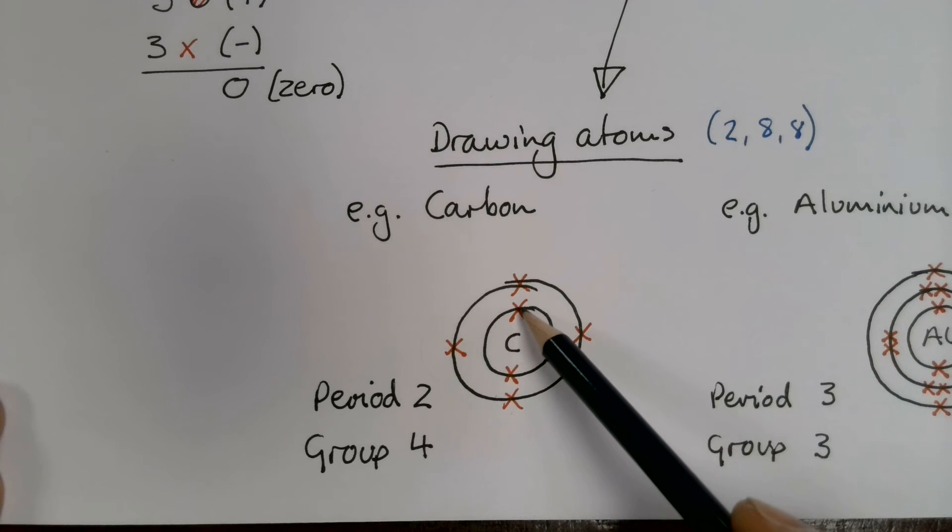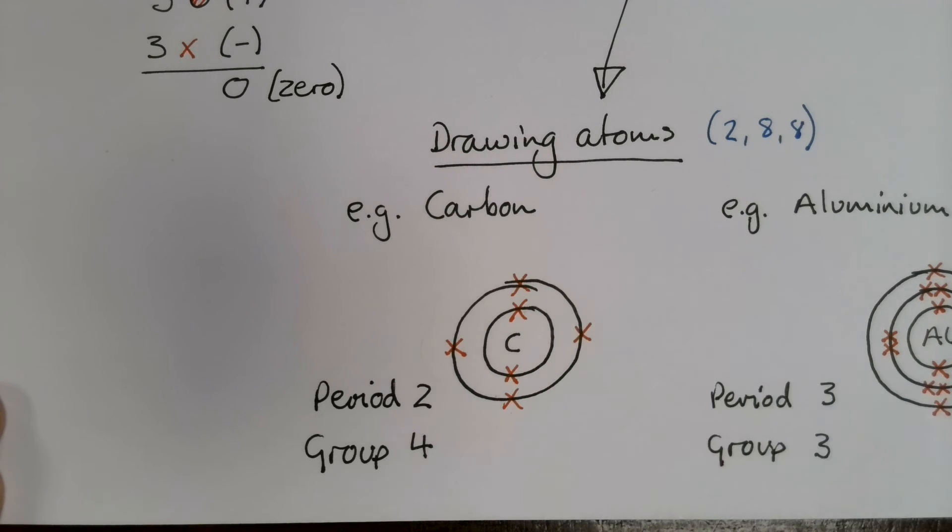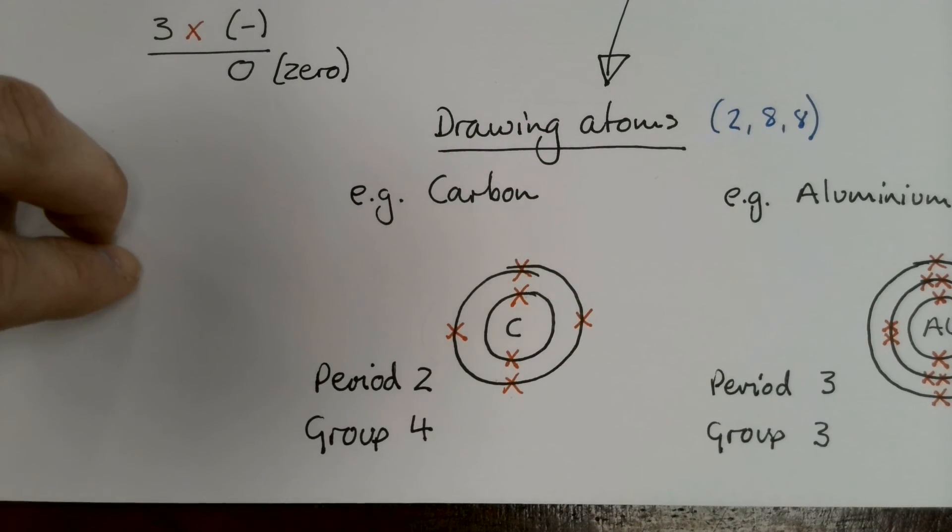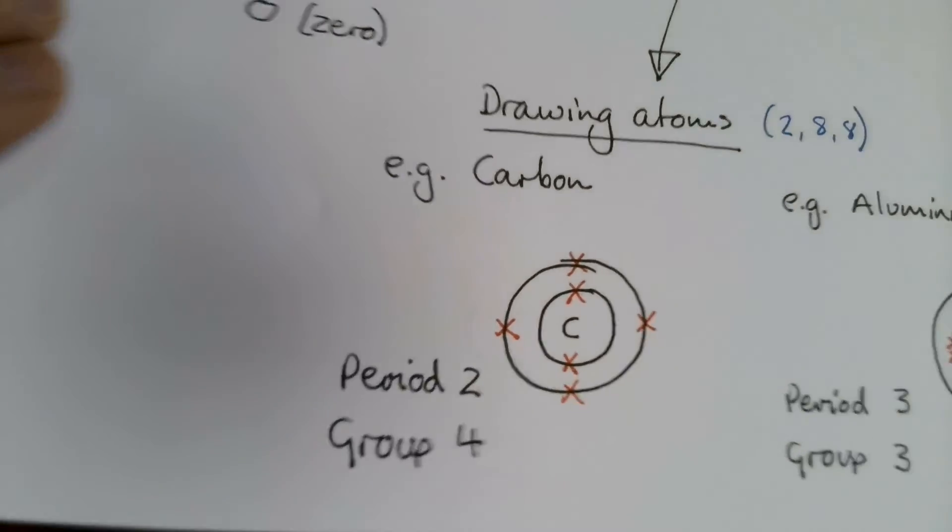When drawing atoms, we tend to work from the inside outwards. I'll show you on the next example. And this is just the right way to represent the number of electrons in a carbon atom and where they are.